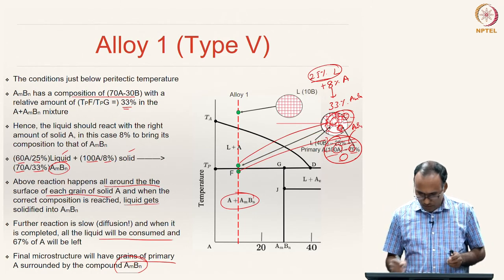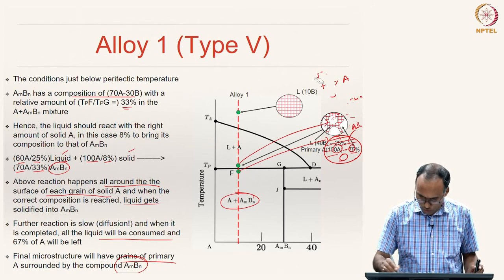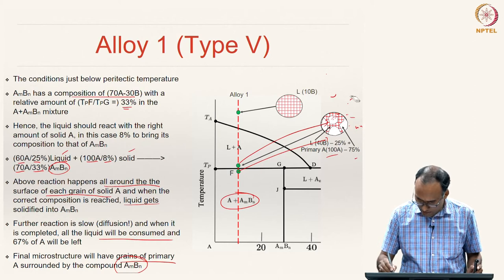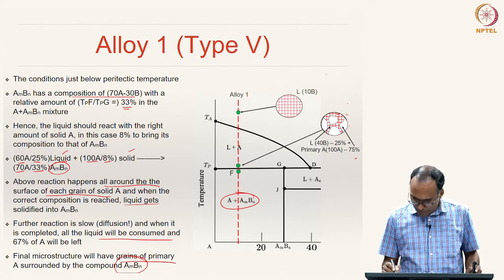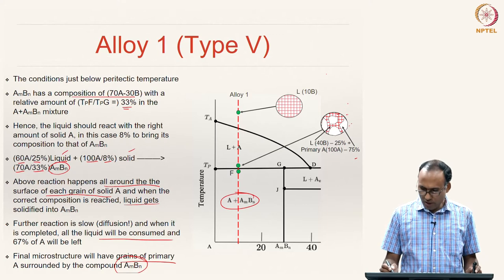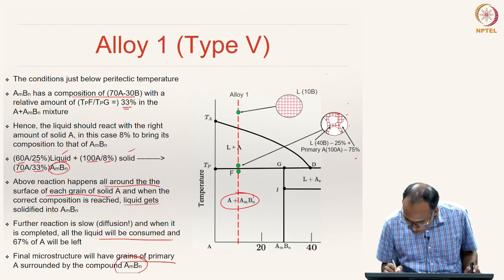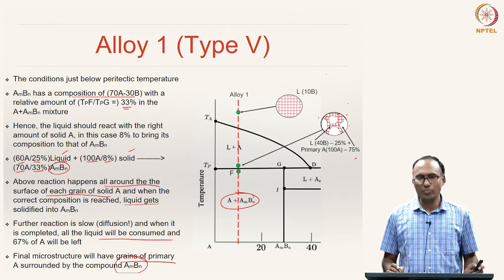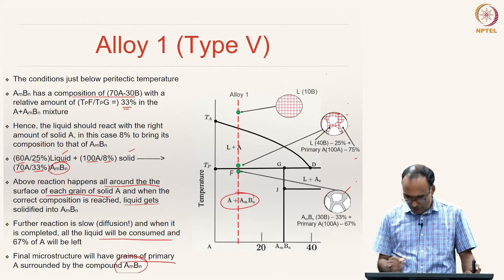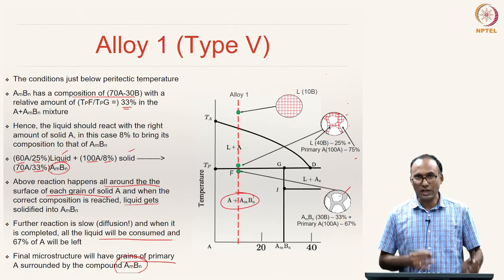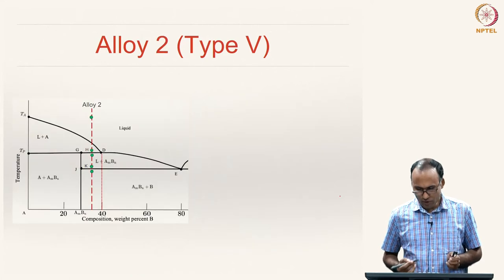The final microstructure of Alloy 1 will have grains of primary A surrounded by the compound A_M B_N. Just above the peritectic line, the microstructure shows liquid (hashed region) and primary A (white region). At the peritectic temperature, primary A on its surface reacts with the surrounding liquid to form A_M B_N. So the microstructure is primary A at the center with A_M B_N surrounding it—that is the final microstructure of this alloy.